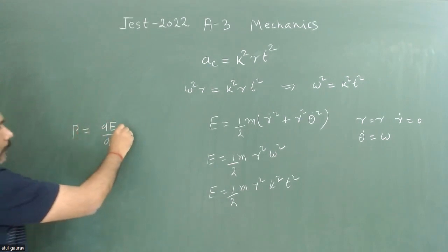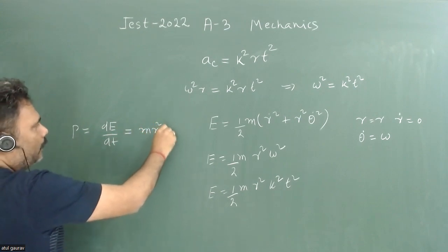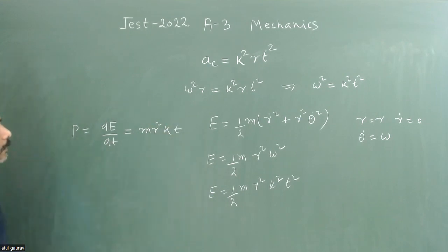That is our power and this value is equal to mr²kt. So this will be the answer and I think this is option A.